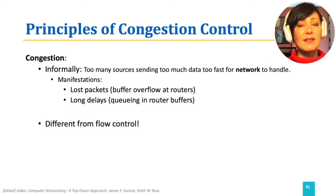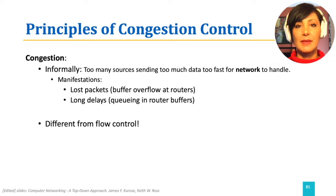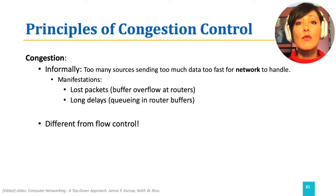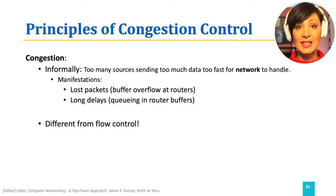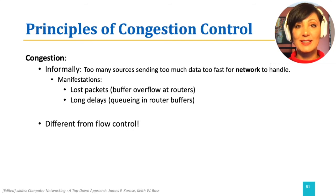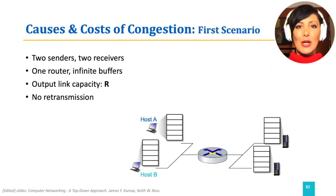Please note that congestion control is different from flow control. In flow control, the sender controls the rate of transmission to prevent overwhelming the receiver. In congestion control, the sender will try to control the data it's sending to avoid causing congestion within the network on the path to the destination. Let's examine a few simplified scenarios to better understand the source of congestion and its effects on performance.